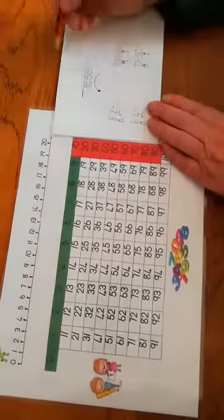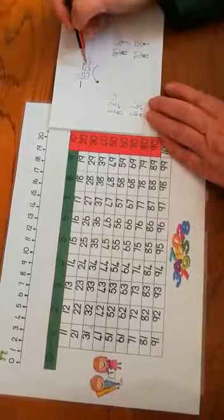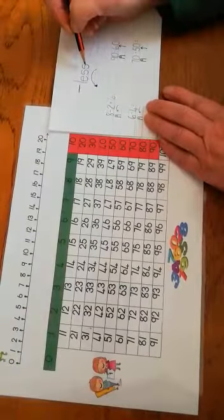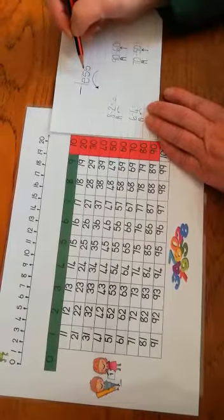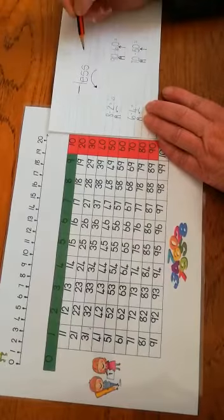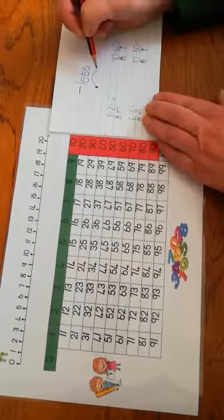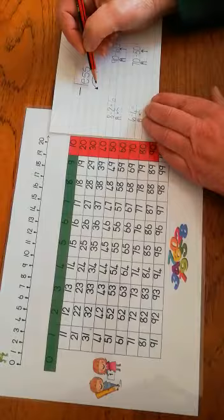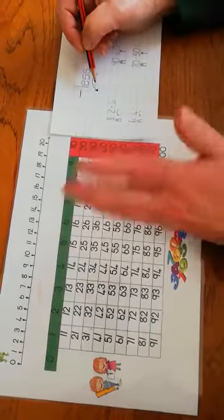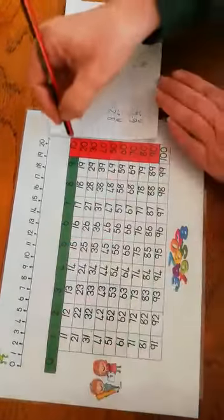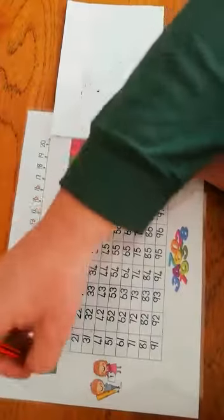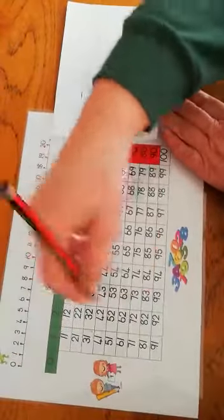So we are going less. When we added, we went more, now we're going less. So when we jump in ones, we go to the left because we're going towards 0. That's the smallest number on this number chart.